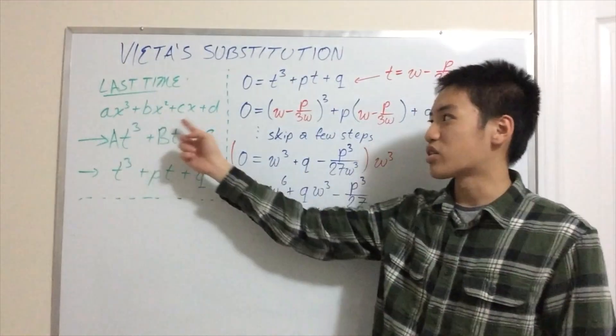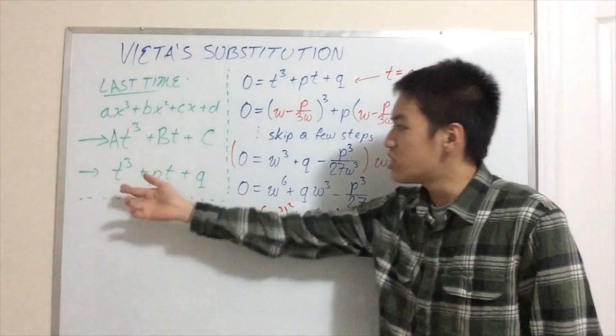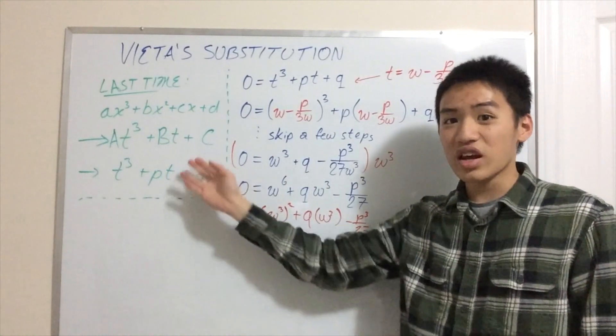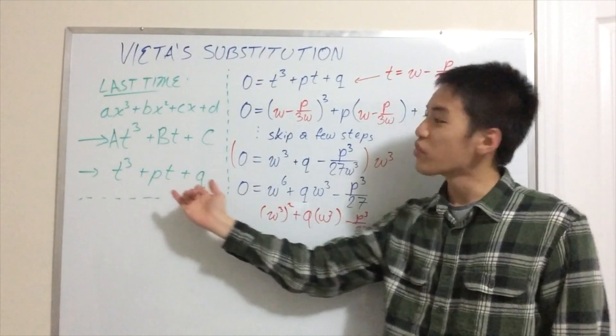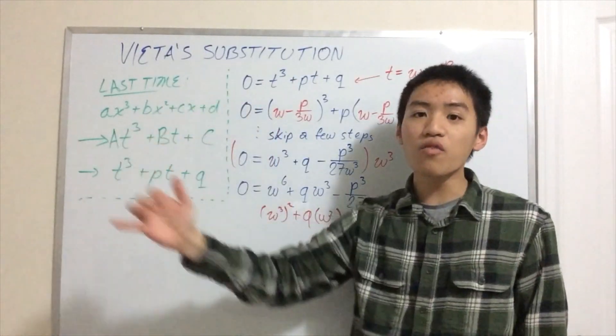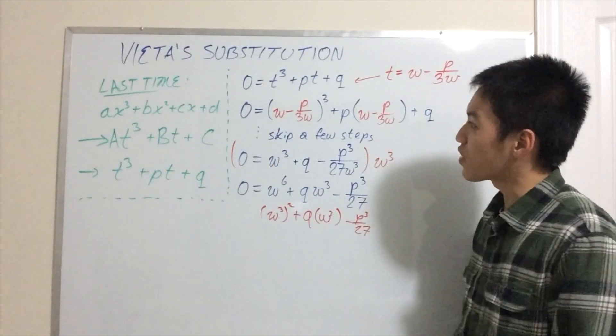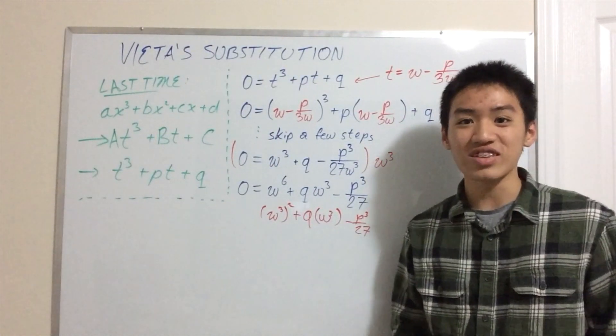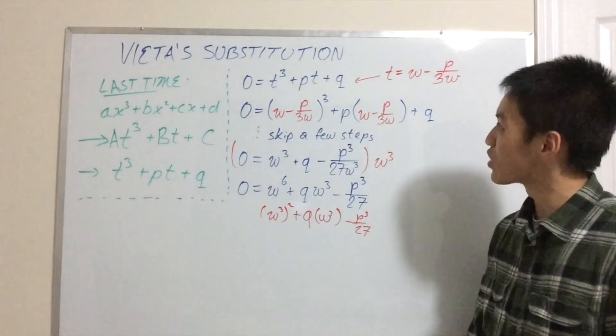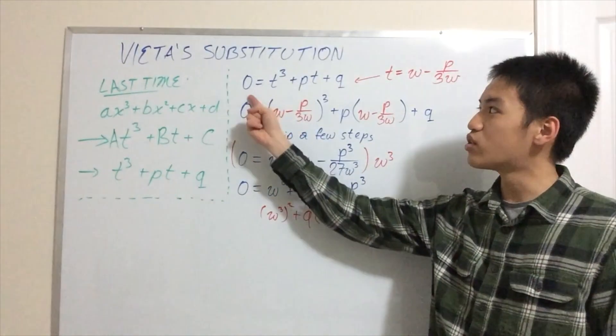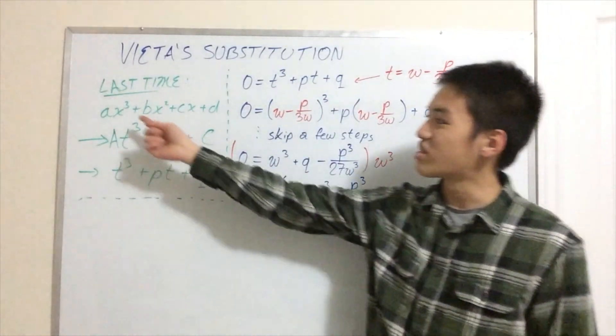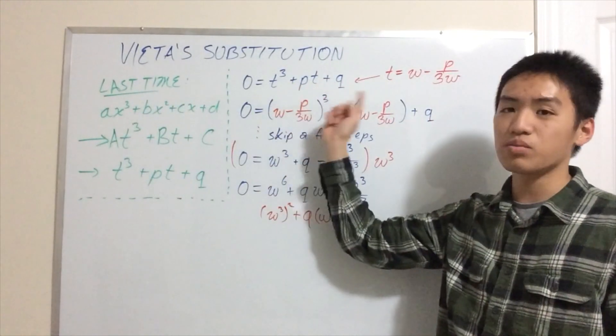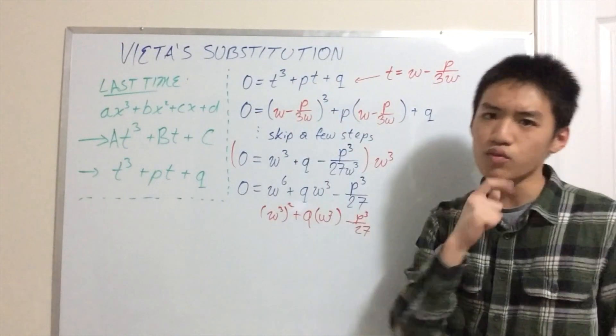And if we can go from ax³ + bx² + cx + d to t³ + pt + q, we can actually go back as well. So if we can find the roots for this form, we can actually find the roots for all forms of cubic functions. And in fact, that means we can solve cubic equations in general. That's very nice. So we only need to consider 0 = t³ + pt + q, because all equations can be reduced to this form.